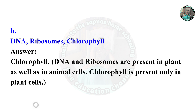Part B: DNA, ribosomes, chlorophyll. Answer: Chlorophyll is the odd man out. DNA and ribosomes are present in both plant and animal cells, but chlorophyll is present only in plant cells.